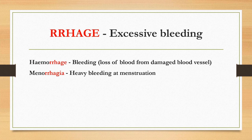The eighth one is '-rrhage' which means excessive bleeding. For instance, hemorrhage — loss of blood from damaged blood vessels. Menorrhagia — heavy bleeding at menstruation.